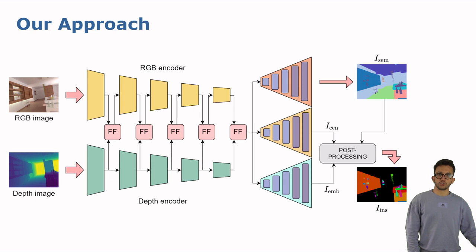Our approach consists of a convolutional neural network that takes the RGB and the depth frames as inputs and gives both semantic and instance segmentation masks as output. Let's have a better look at the architecture now.